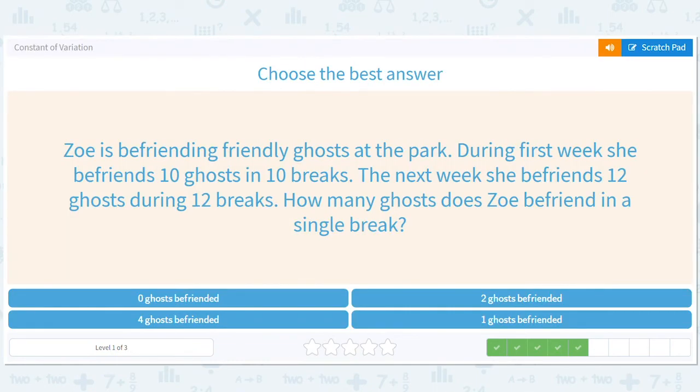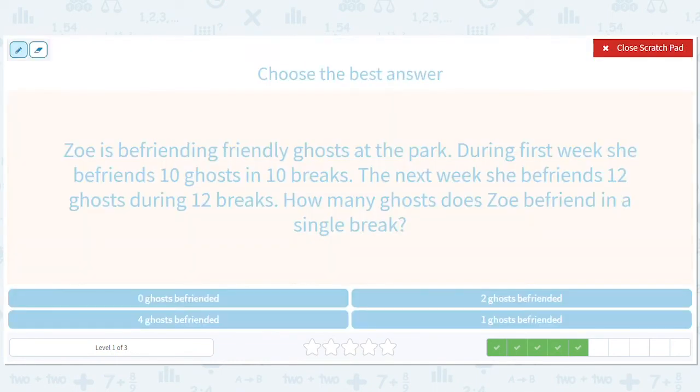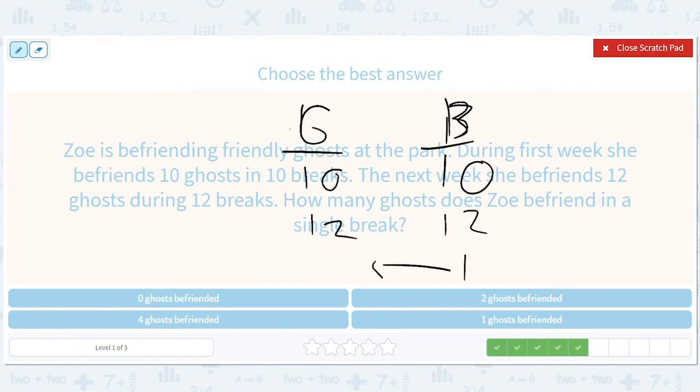Zoe's befriending friendly ghosts at the park. During the first week, she befriends 10 ghosts. So ghosts, breaks. So 10 ghosts, 10 breaks. We already see the pattern. It's the same number of ghosts as breaks. It's times one. 12 ghosts, 12 breaks. How many ghosts has she befriended in a single break? Well, one ghost.